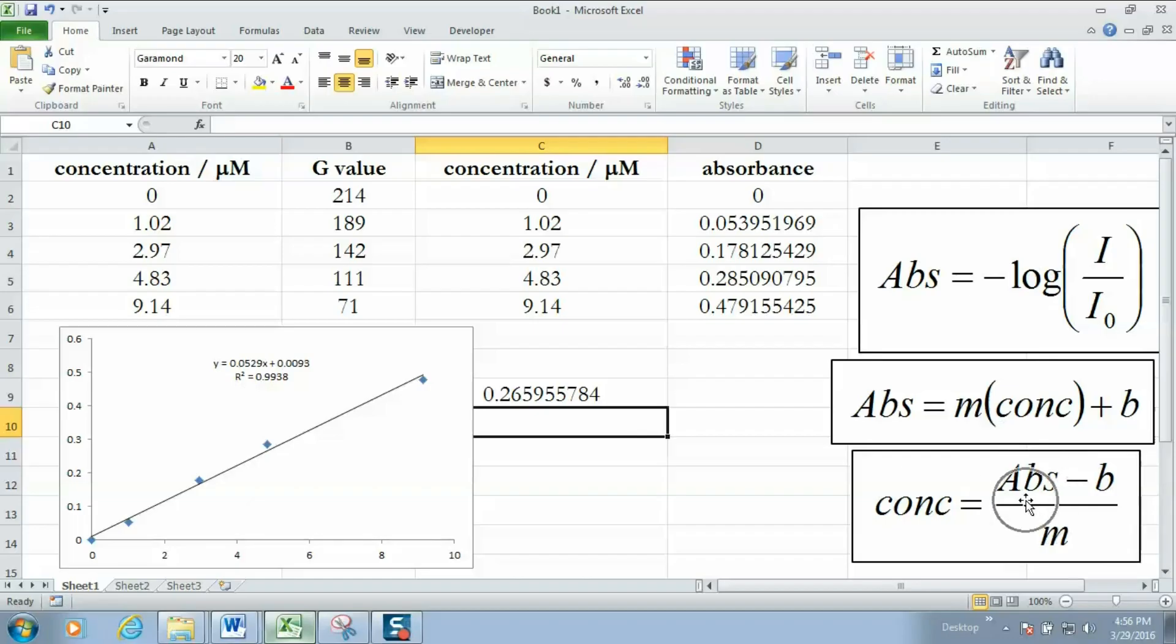Now using this particular equation here and our values over here we can find the concentration of red dye number 40 in the unknown. First I'm going to go ahead and take my absorbance and I'm going to subtract the intercept which is 0.0093. So that's giving me the numerator and now we're going to go ahead and divide by the slope to give me the concentration. So I'm just going to take this value right here. Here's my numerator absorbance minus the intercept and we're going to divide that by the slope which looks like 0.0529.